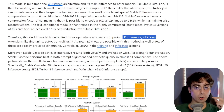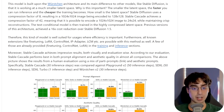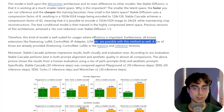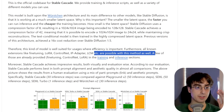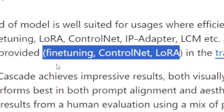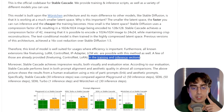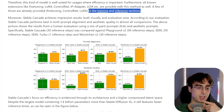Furthermore, all known extensions like fine-tuning, LoRAs, ControlNet, IPAdapter, LCM, etc. are possible with the Wuerstchen architecture. A few of these are already provided — fine-tuning, ControlNet, and LoRA — the most popular ones. These can be found in the training and inference sections.